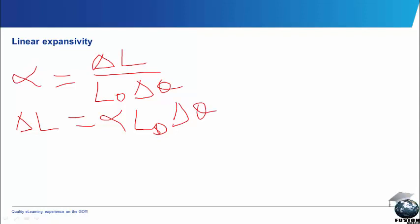Now, if we want to separate change in length, which simply means final length minus original length, we have L minus L0 equal to alpha L0 delta theta.